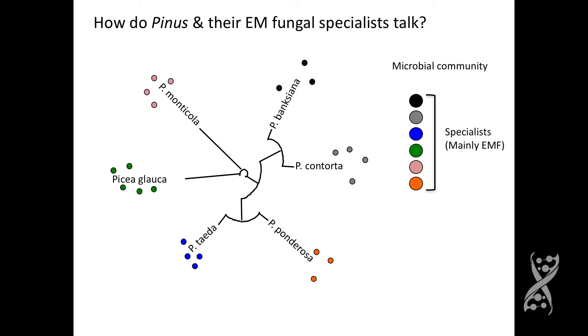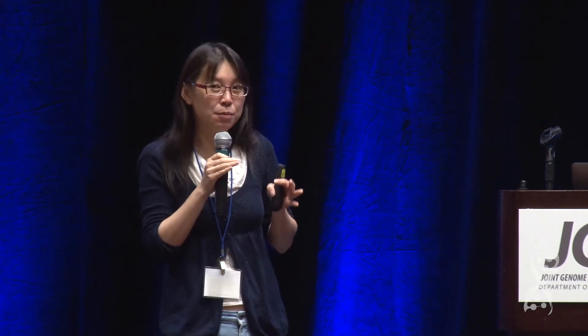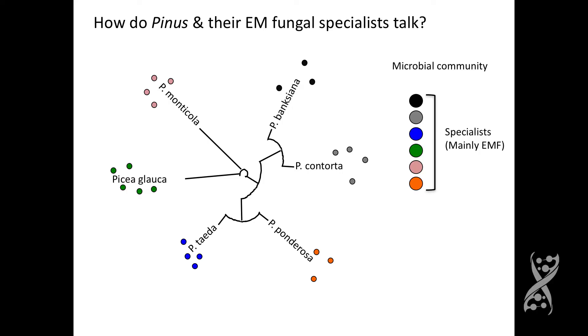Many of the soil microbiome associated with pine are considered generalist, so their distribution is considered more affected by geographic factors rather than the host. However, if we look closely, certain groups still considered generalist have distributions sometimes more associated with their host, and some can even be considered specialists, with distributions restricted to certain pine host species. Most of these fungi are ectomycorrhizal fungi, or EMF.